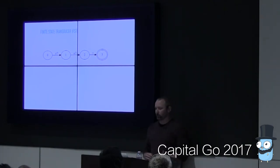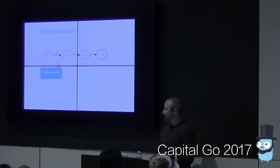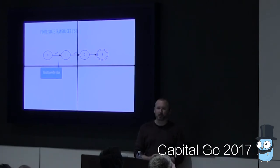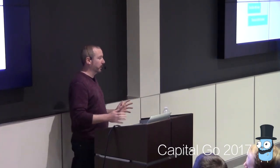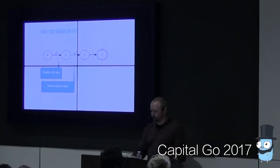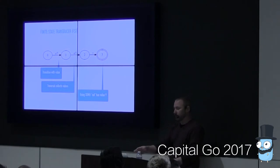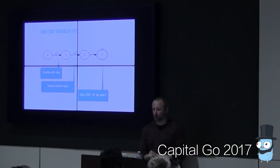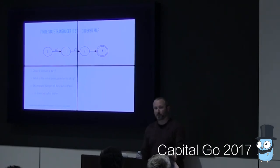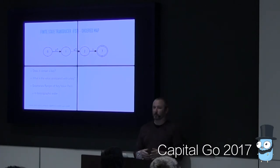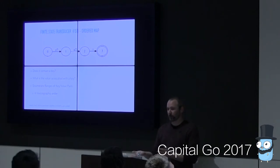Now, back to finite state transducers — what's missing from FSAs? The transitions in the graph now don't just have a byte on the input, but also produce a value as output. As we traverse the graph we encounter multiple values, so we collect them with a function — in our case the sum function. Following these transitions, 'cat' is associated with the value 9. Just like the FSA was an ordered set, the finite state transducer lets us implement an ordered map. We can ask if it contains a key, retrieve the associated value, and enumerate ranges of key-value pairs — all in lexicographic order.